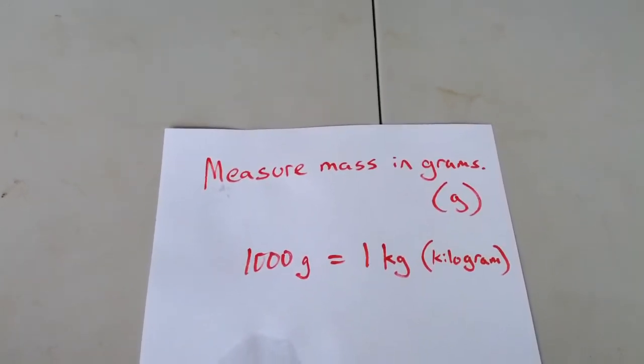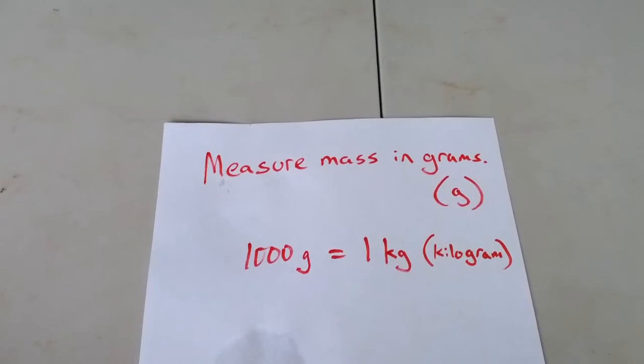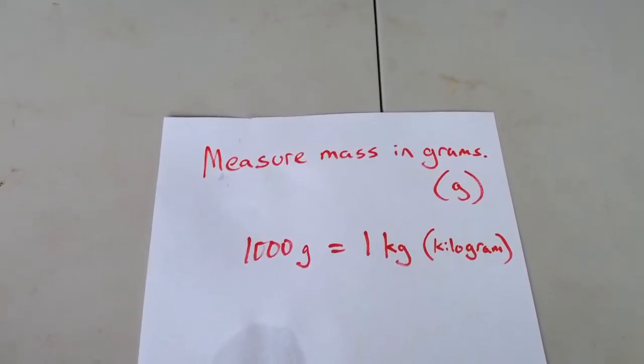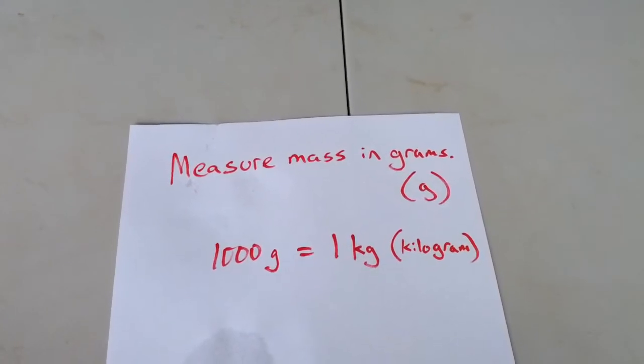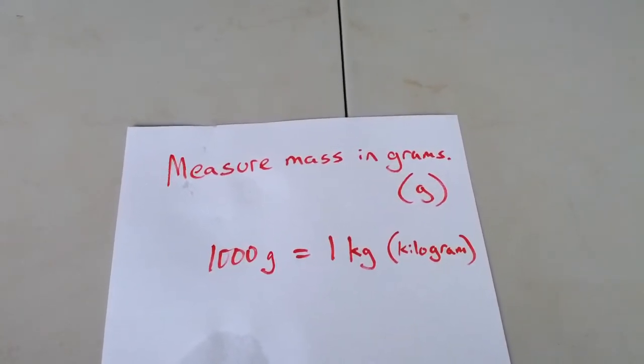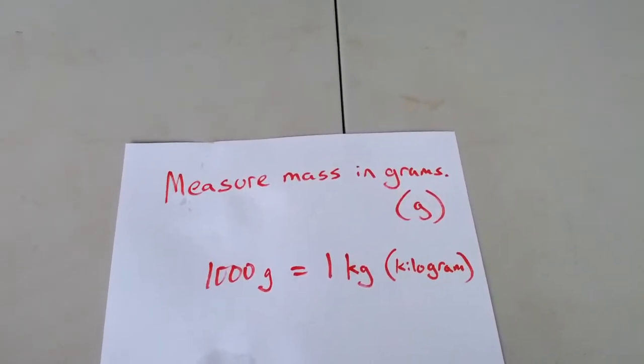And just for reference, 1 kilogram is equal to 2.2 pounds. So if you weigh 100 pounds, you would actually weigh a little less than 50 kilograms, just so you would know that.